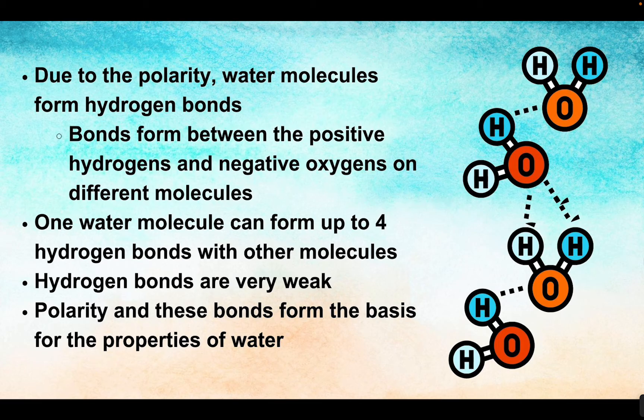One of the things that we see from this polarity is the ability for water molecules to form bonds. These bonds are called hydrogen bonds. Due to this polarity, we're going to have hydrogen bonds forming between the positive hydrogens on one molecule and the negative oxygens on a different molecule. These are fairly weak bonds, but one water molecule can form up to four hydrogen bonds with other water molecules, giving us this interconnected substance when all the water molecules come together. Both polarity and the ability to form hydrogen bonds really form the basis for the properties of water.